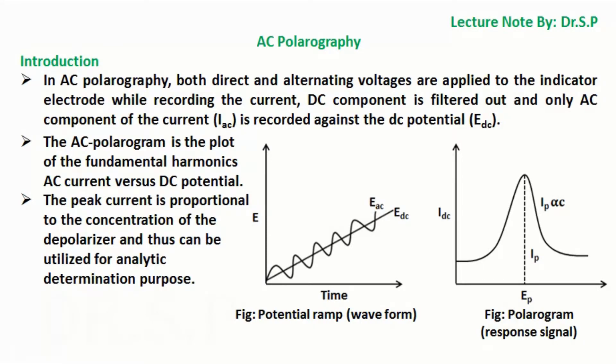The AC polarogram is the plot of the fundamental harmonics AC current versus DC potential. The peak current is proportional to the concentration of the depolarizer and thus can be utilized for analytical determination purposes. A simple illustration of potential ramp waveform and polarogram response signal is shown in the figure.